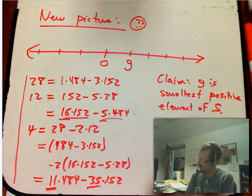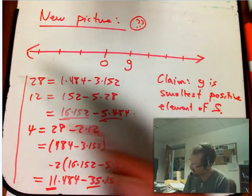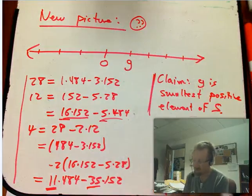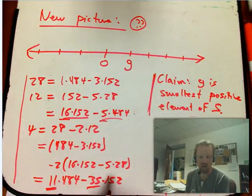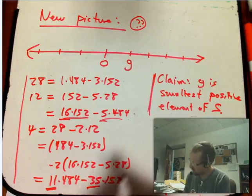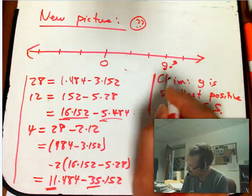So if I look at all the positive numbers in there, in S, then certainly 0 is the closest to 0, and then there's negative numbers. But if I look at the smallest positive element of S, I claim G has to be that one. Because we know now that G is going to be able to be written as a linear combination.